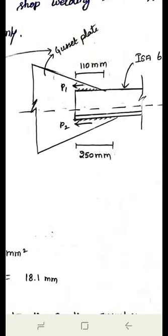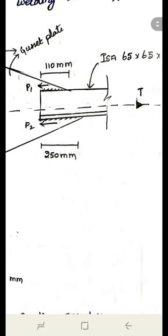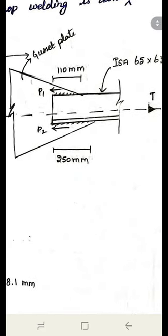I have marked that the top weld is 110 mm and the bottom weld is 250 mm. The bottom value is higher than the top because the force acts nearer to the bottom edge — which is very logical. The length of weld required at the bottom is greater.